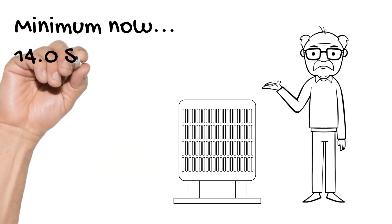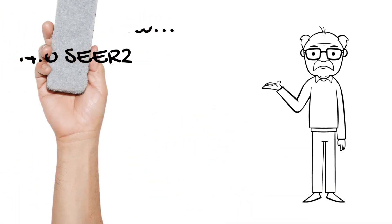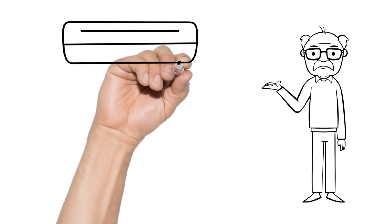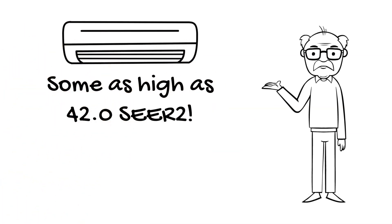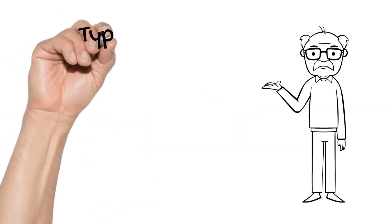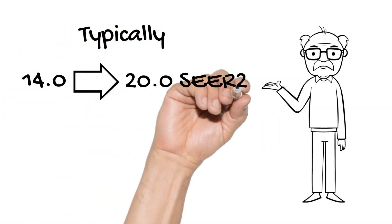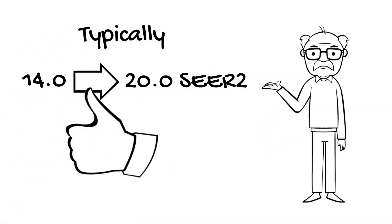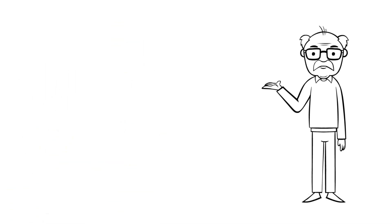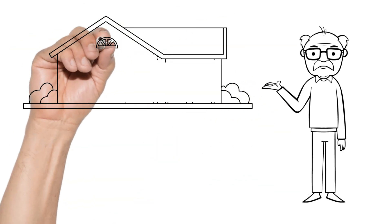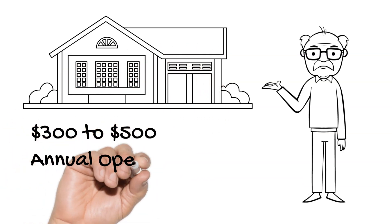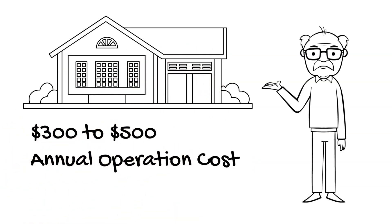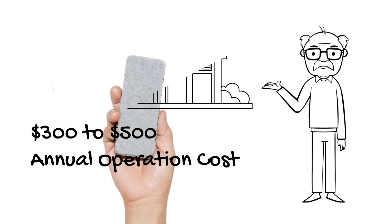The minimum is now 14.0 SEER2. There are some units that go as high as 42.0 SEER2. Typically, 14 to 20 SEER2 models are good values here in the Yakima area. You can expect an average size modern home to pay about $300 to $500 per year for air conditioning at these SEER2 numbers.